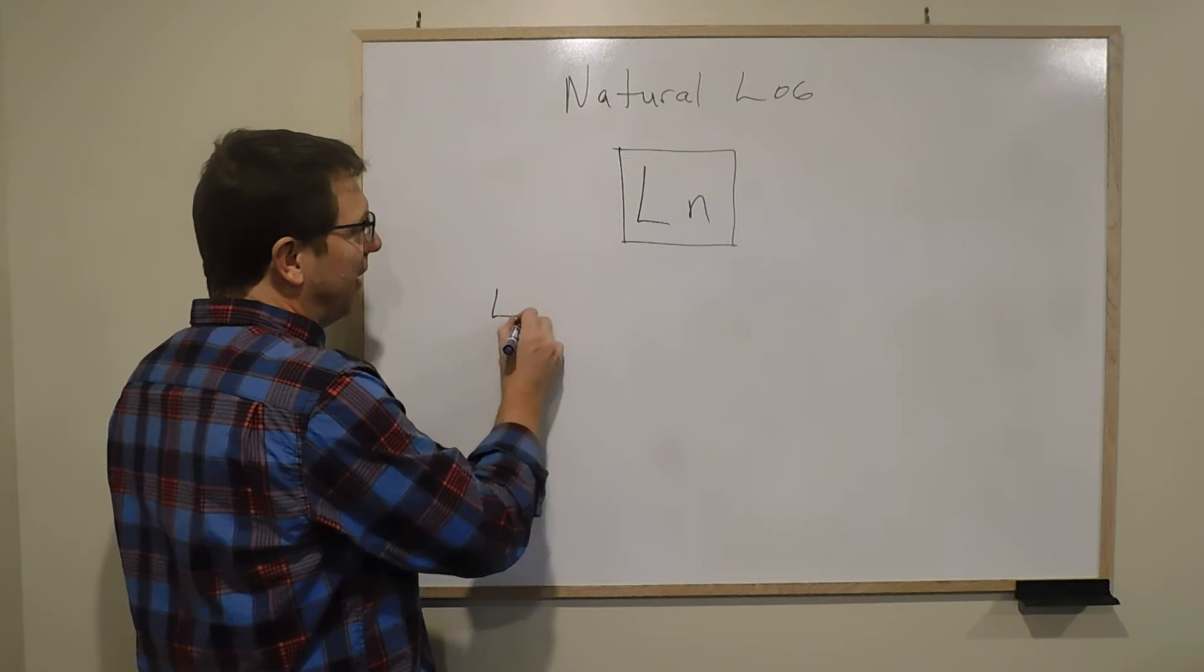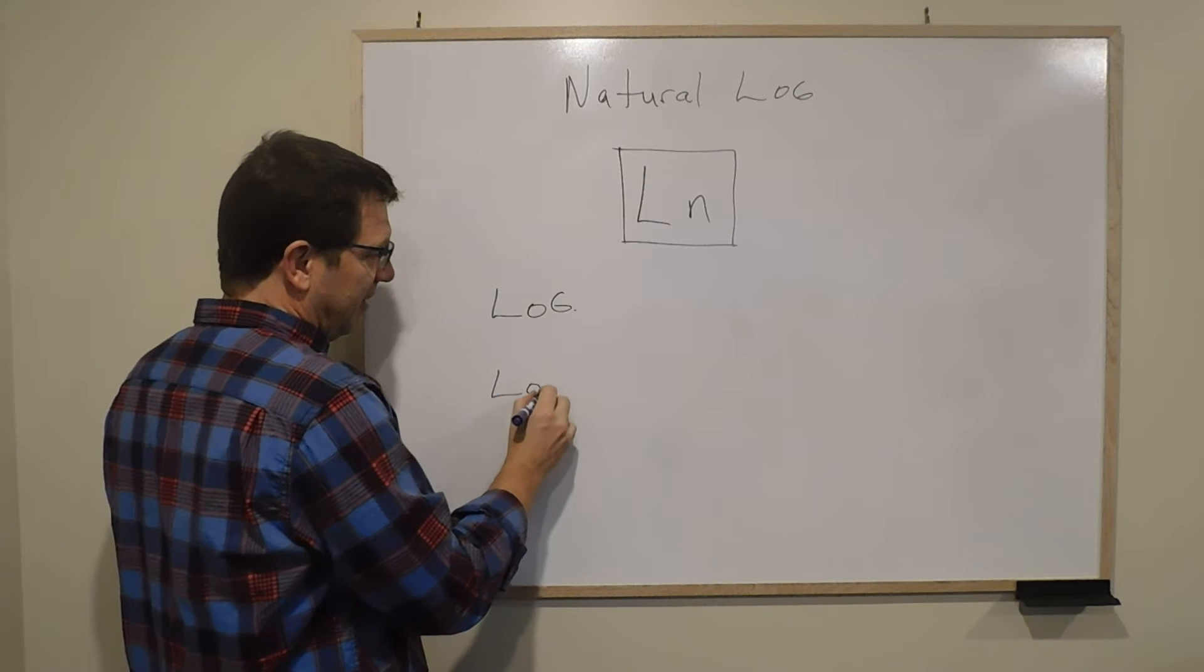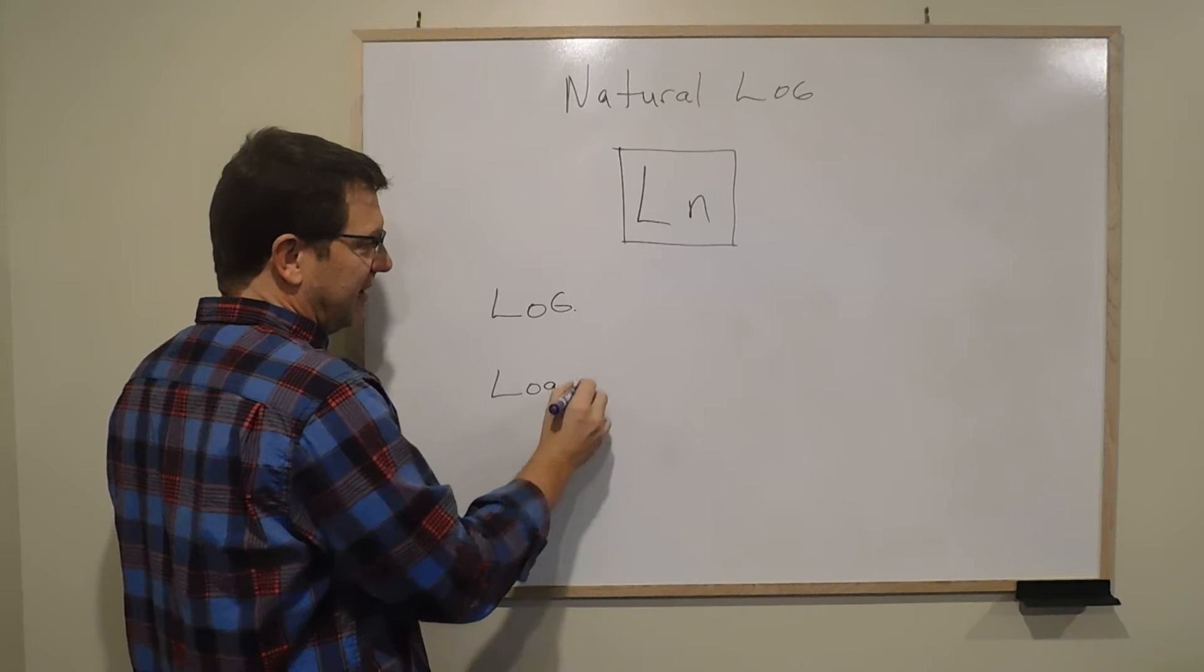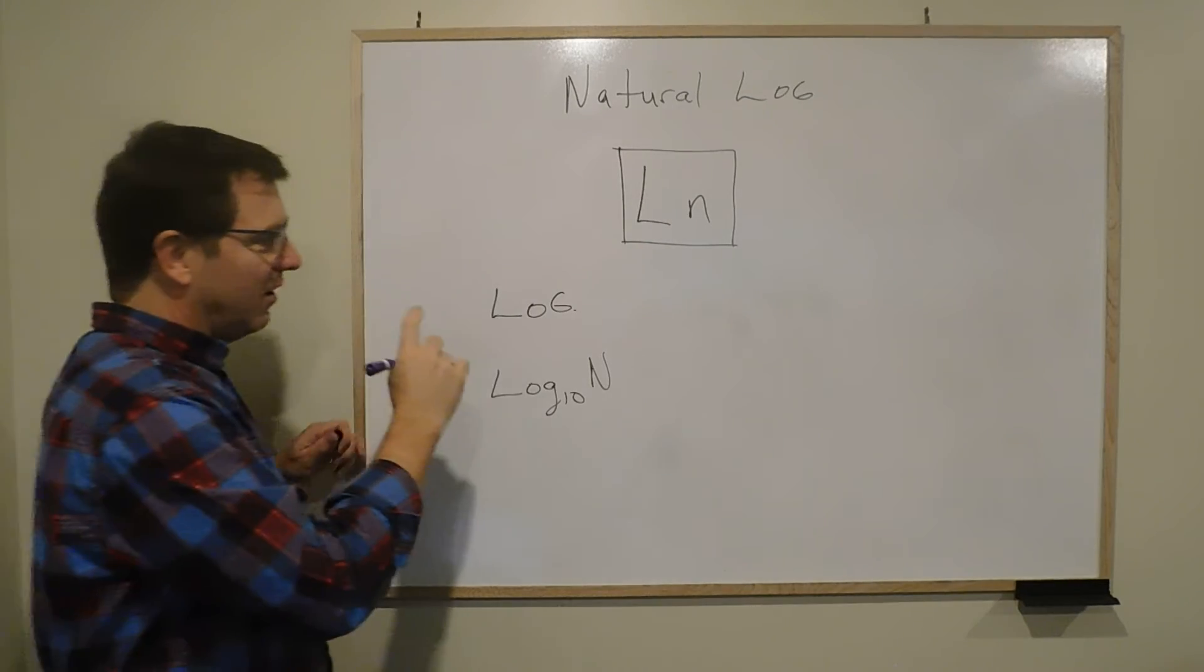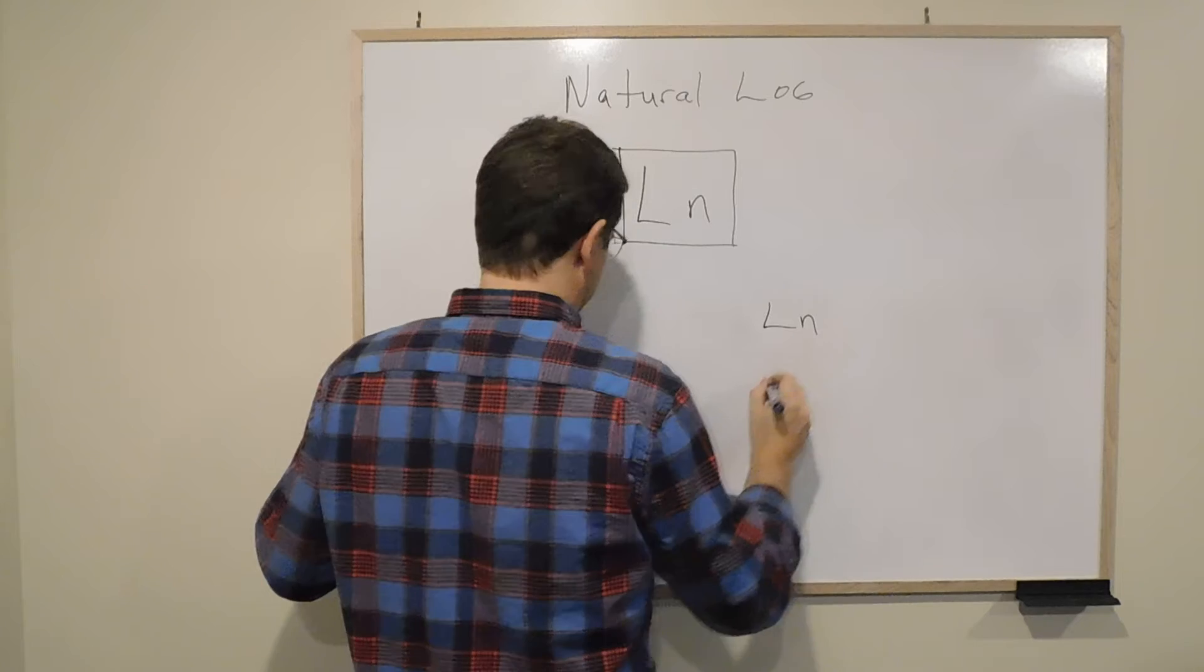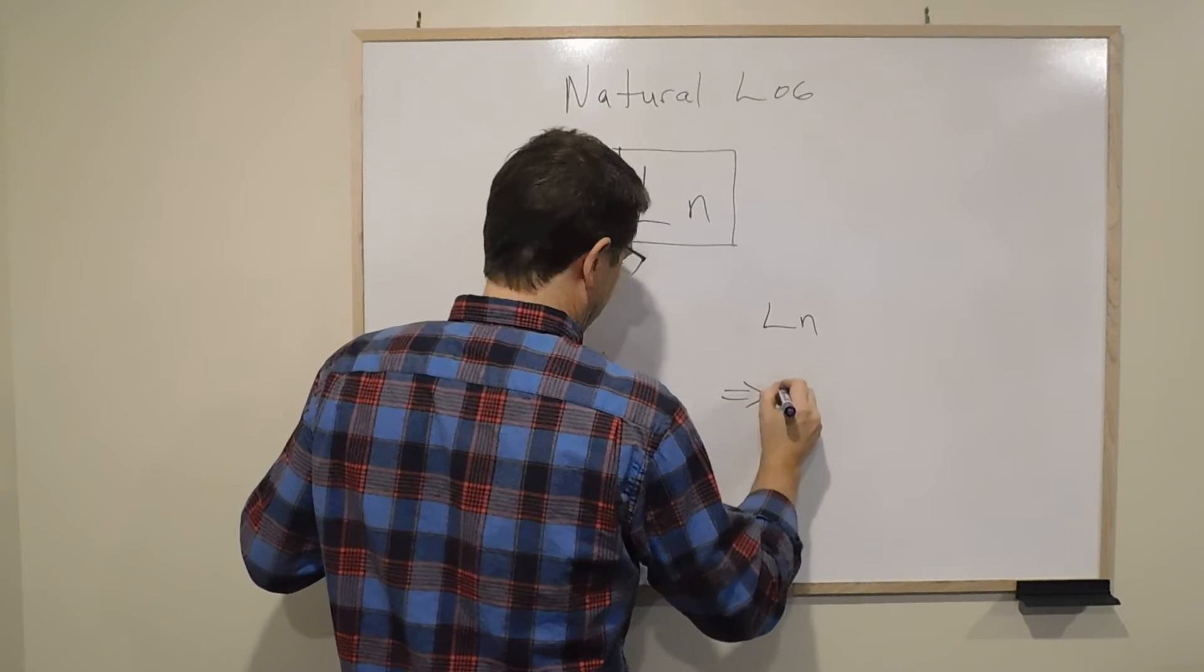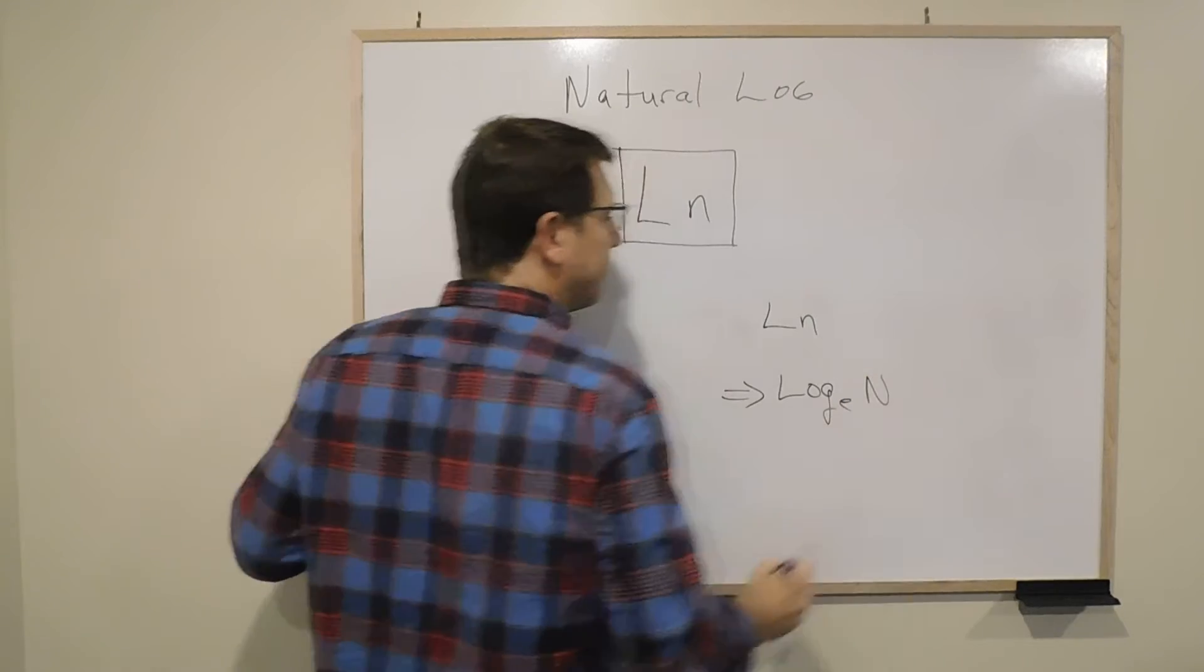So your log button means that is log base 10 of some number. Okay. The lawn button - that's really log base E of some number.